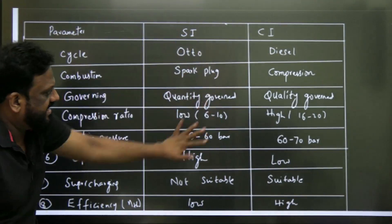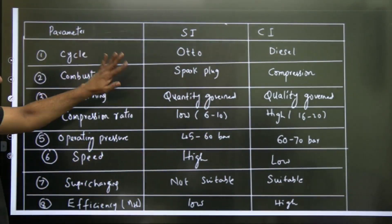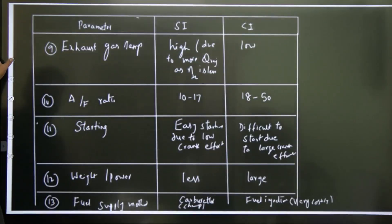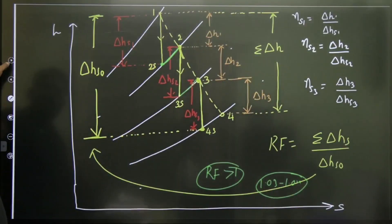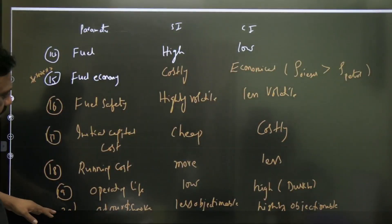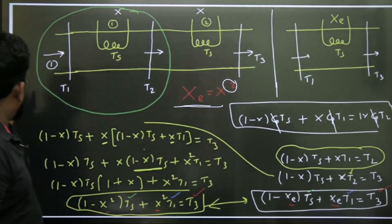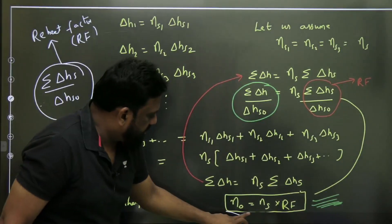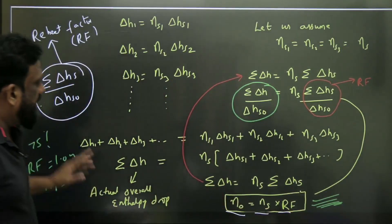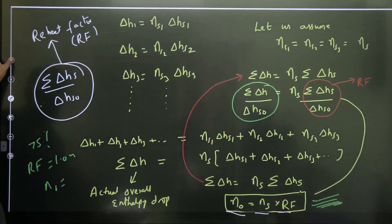So then this is from IC engines. Yes, Otto cycle, diesel cycle comparison, SI engine, CI engine, all comparisons. So I think I gave around 23, 24 comparisons between SI and CI engines. Then we have reheat factor, that is steam turbines. So the relationship between overall efficiency, stage efficiency, reheat factor, which is important from engineering services point of view.